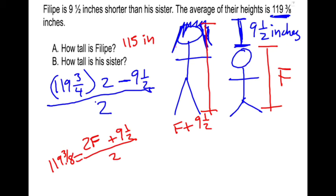And his sister is 124 and a half inches tall, because that's nine and a half inches more than 115. Double checking, 115 plus 124.5 divided by two is 119.75.